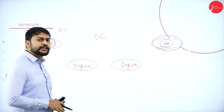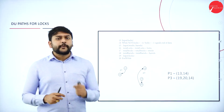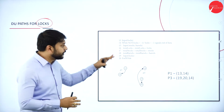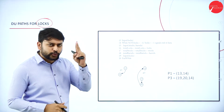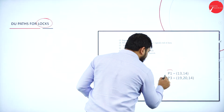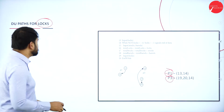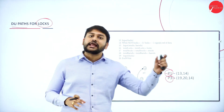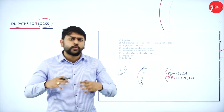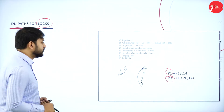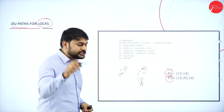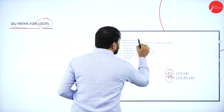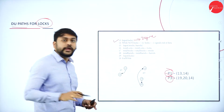Now with an example, let's understand the DU path for the locks variable. I have taken two paths named P1 and P3. We are trying to understand the definition use path — the first node should be a definition and the last node should be a use. In between, you can define or use whatever you want. So I have the first path P1, which starts with node number 13, that is line number 13.